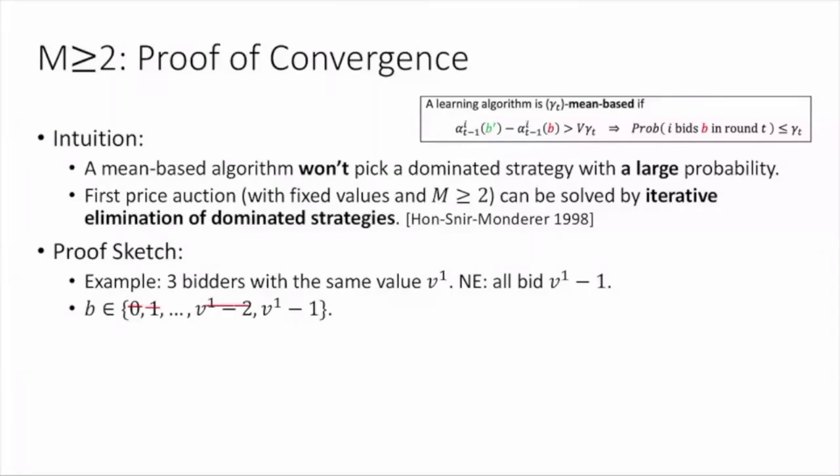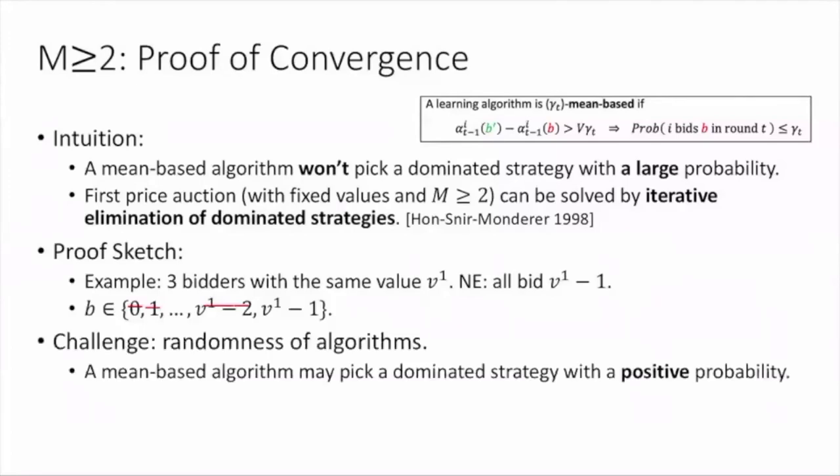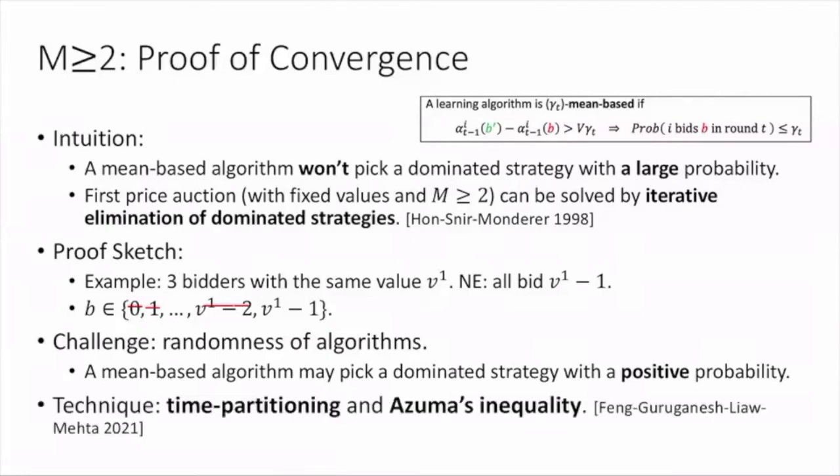However, there is a key challenge in the proof due to the randomness of the algorithms. Recall the definition of mean-based again. The algorithm may pick a dominated strategy with positive probability. So additional argument is needed to show that bidders will finally converge to V1-1 with high probability. Our key technique is a combination of time partitioning and Borel-Cantelli lemma, which is also a key idea in previous work.